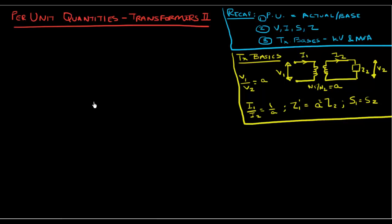This is our second video discussing per-unit quantities with transformers. Let's do a quick recap: per-unit quantities are defined as actual quantities over base quantities. The four electrical parameters we are interested in are voltage, current, power, and impedance.